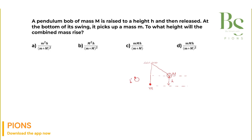To recap the whole scenario: initially there is a simple pendulum with mass capital M. When it is released from height h on the right-hand side, it goes down, finds small m, both stick together, and go to the left-hand side, reaching height h dash.